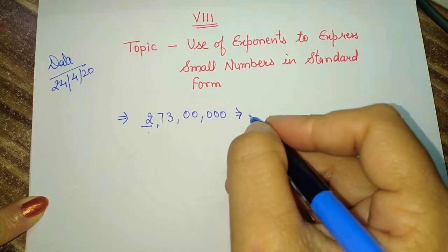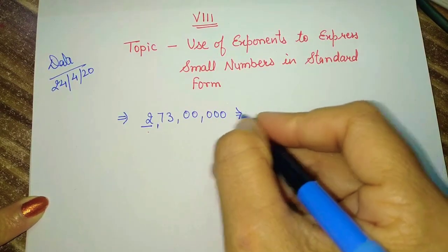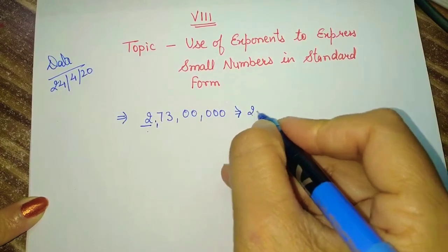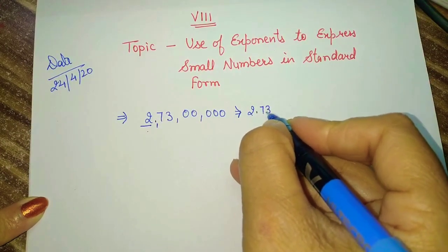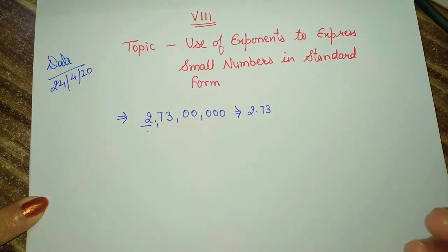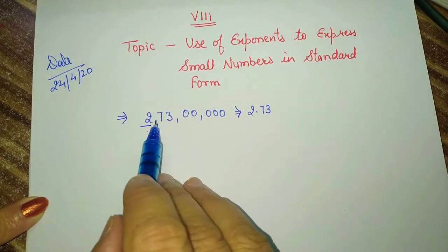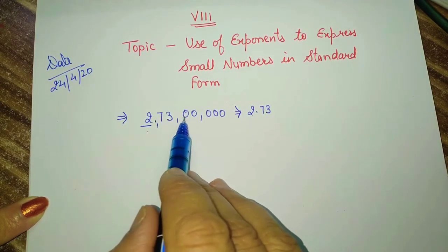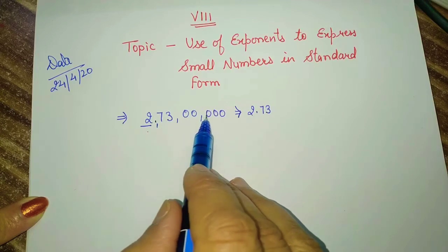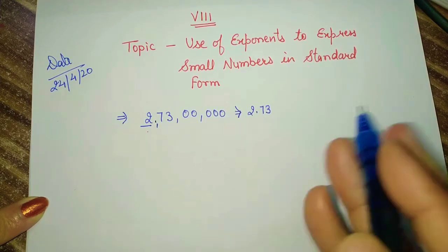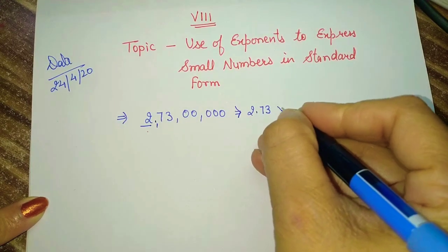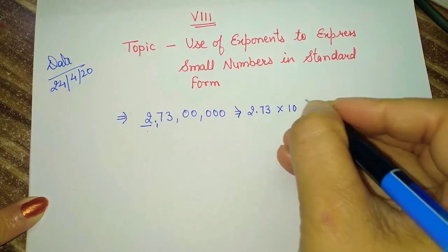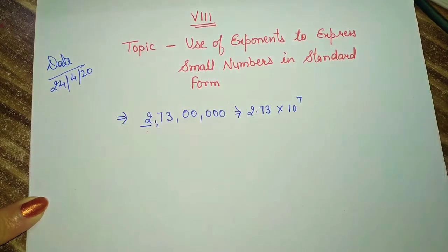If we put the decimal after the first digit, we can write this number as 2.73. Then after the first digit, how many digits are there? 1, 2, 3, 4, 5, 6, 7. So we can write this number as 2.73 × 10 raised to power 7.